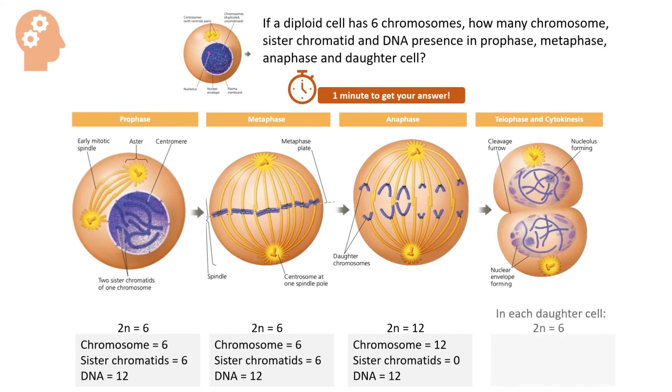In the daughter cell, the number of chromosomes is 6, the number of sister chromatids is 0, and the number of DNA molecules is 6.